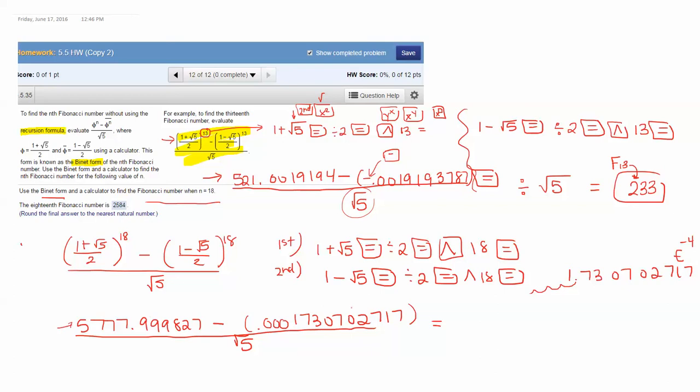I have 5777.999827 minus 0.0001730702717. Press equals, divide by square root 5 equals. Get an exact number: 2584. And you can check this on your list. This is F sub 18.